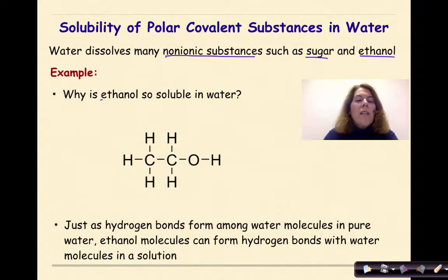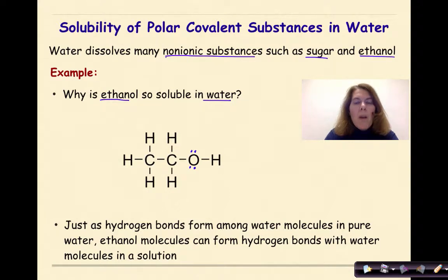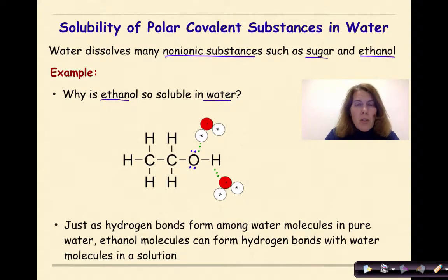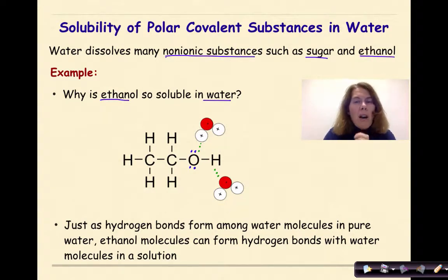Water dissolves many non-ionic substances such as sugar and ethanol. Ethanol is very soluble in water because of the oxygen atom on the end of the ethanol molecule, which has two lone pairs. Water molecules can form hydrogen bonds with ethanol — the slightly positive hydrogen of ethanol forms a hydrogen bond with a water molecule, and the oxygen lone pair forms a hydrogen bond with the slightly positive hydrogen of another water molecule. These hydrogen bonds pull ethanol molecules away from each other.